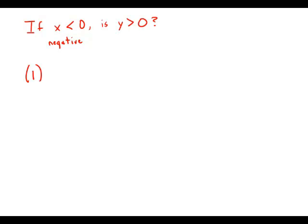Statement number 1 says that x over y is negative. We know that a negative divided by a negative would be a positive. But a negative divided by a positive would be negative.